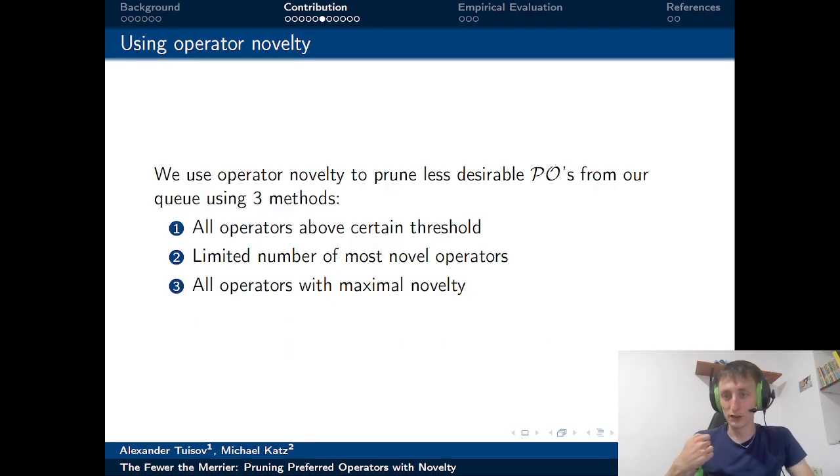Having defined the novelty of an operator, we can use this definition to prune our preferred operator set, where we believe that the more novel operators will lead us to better search outcomes. We propose three methods. We can take all operators above a certain threshold of novelty. We can also limit the number of operators that we want to take into consideration, for example taking the 10 most novel operators. And thirdly, we can take all the operators that achieve the maximal novelty that has been observed.